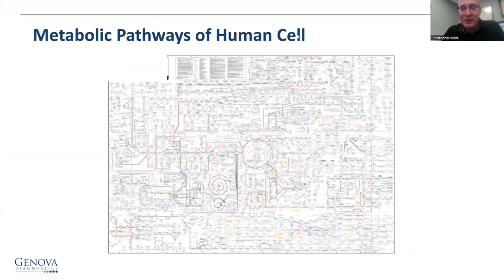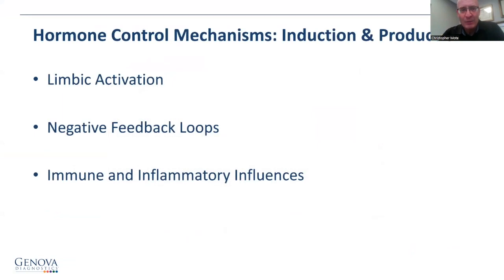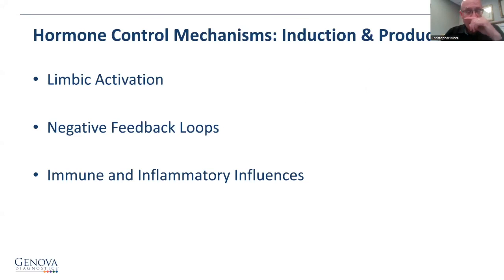Any discussion of human physiology is complex. Case in point: the metabolic pathways of the human cell — we've all seen this — it's a good illustration of just how incredibly complex one cell can be. On the hormone production side, you have limbic activation, the nervous system of the HPA axis stimulating the hormonal response, negative feedback loops that control production, and inflammatory influences — cytokines and their effects on hormone production.